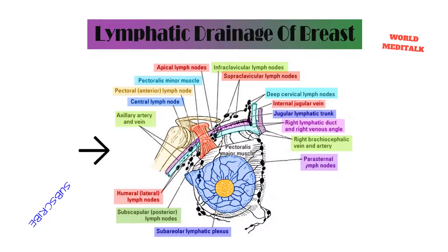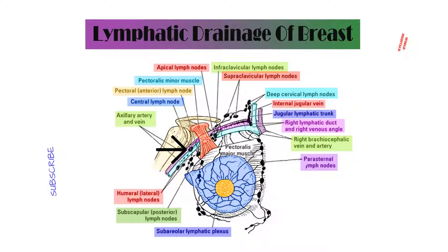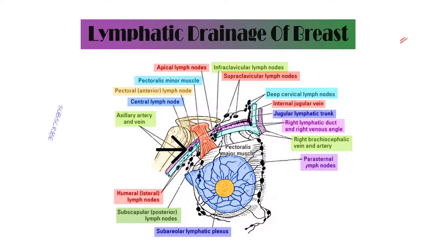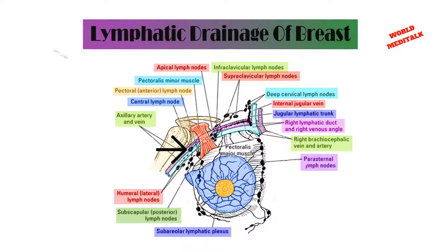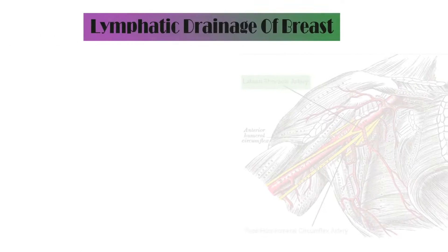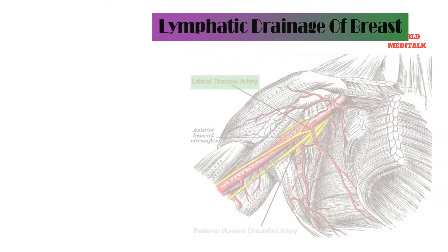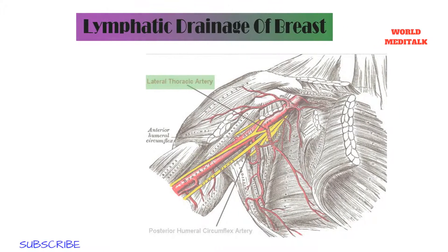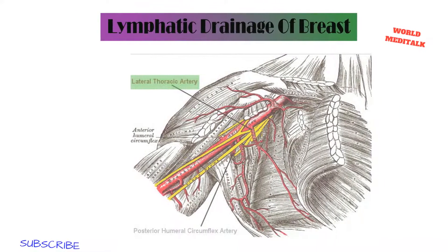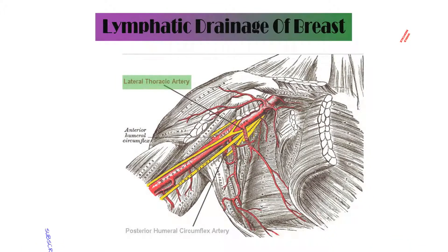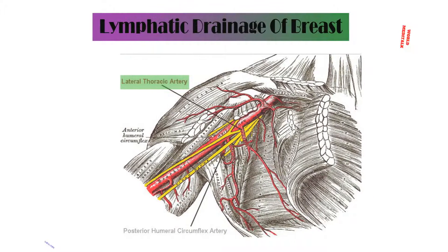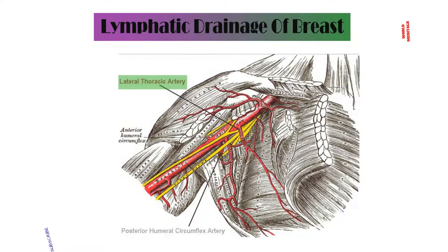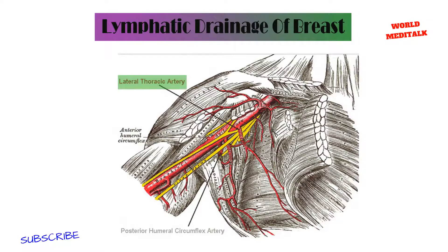The lymphatic drainage of the breast is very important to know because they are involved in the carcinoma of breast. The first group of lymph node is the anterior pectoral, or external mammary group of lymph nodes. This group lies in relationship with the lateral thoracic vessels, which is a branch of the axillary artery.